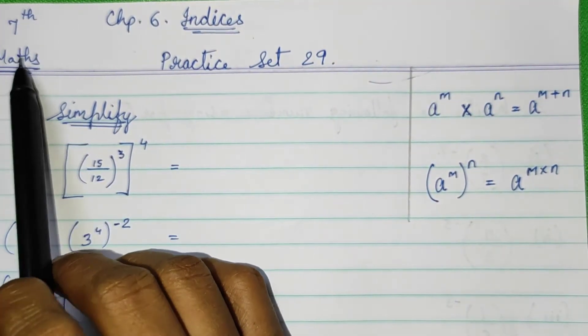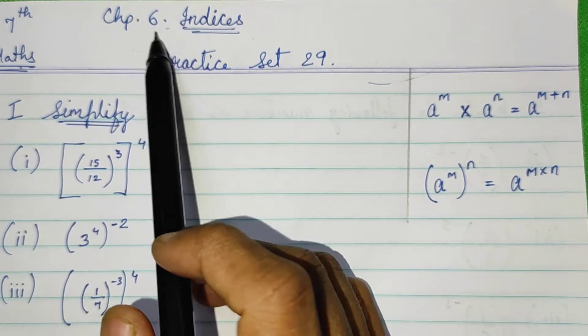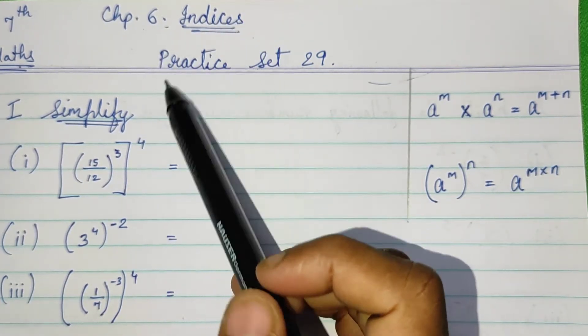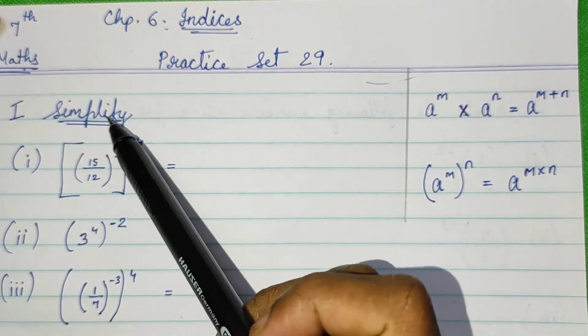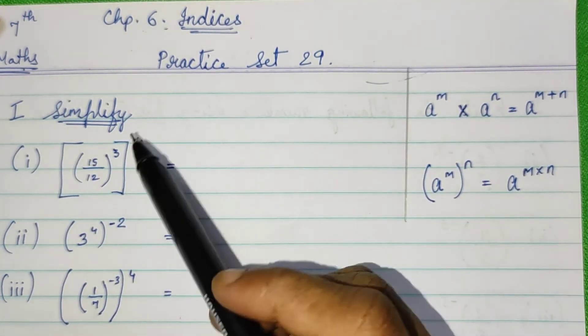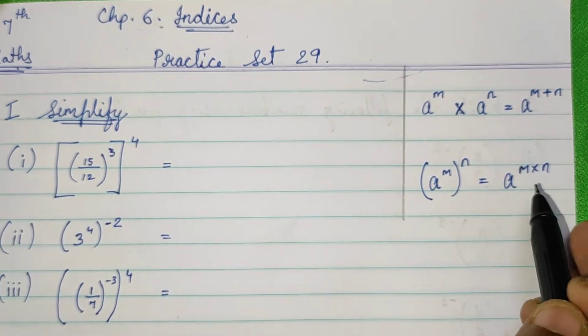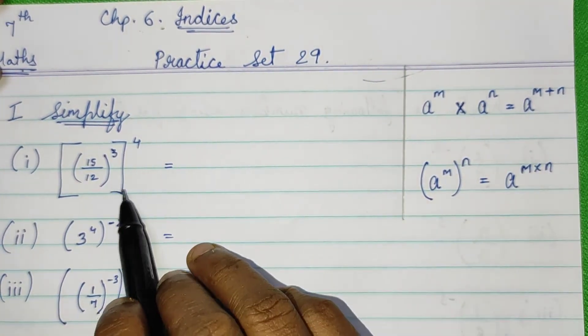Standard 7th Maths Chapter 6 Indices, Practice set 29. First question simplify. Before we solve these sums, let's see the formula to solve these sums.